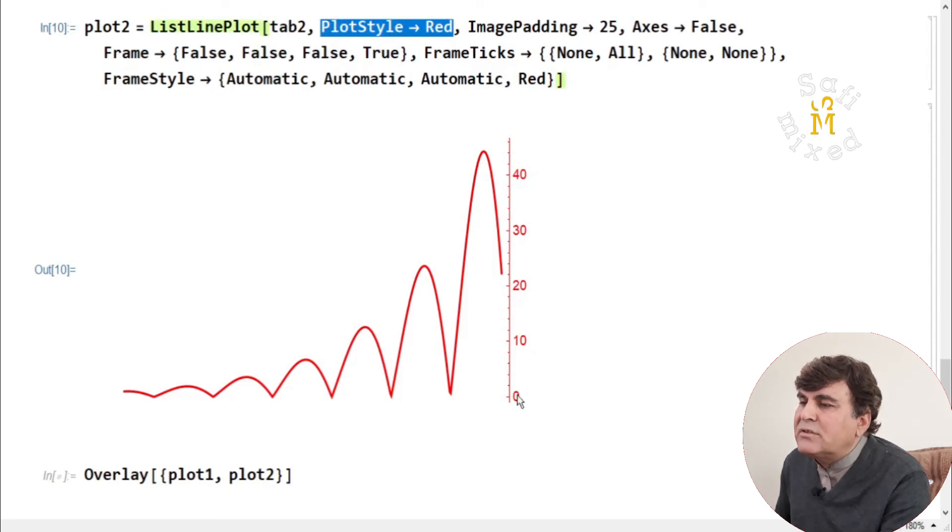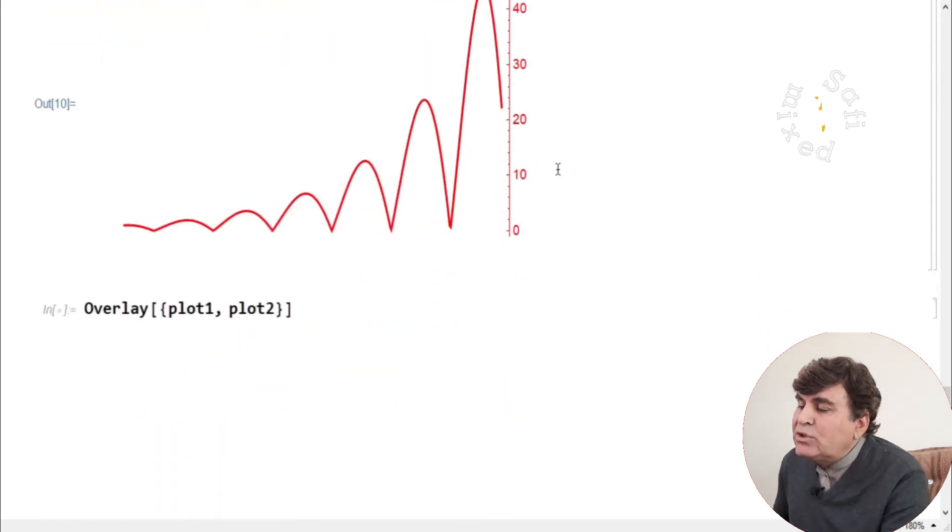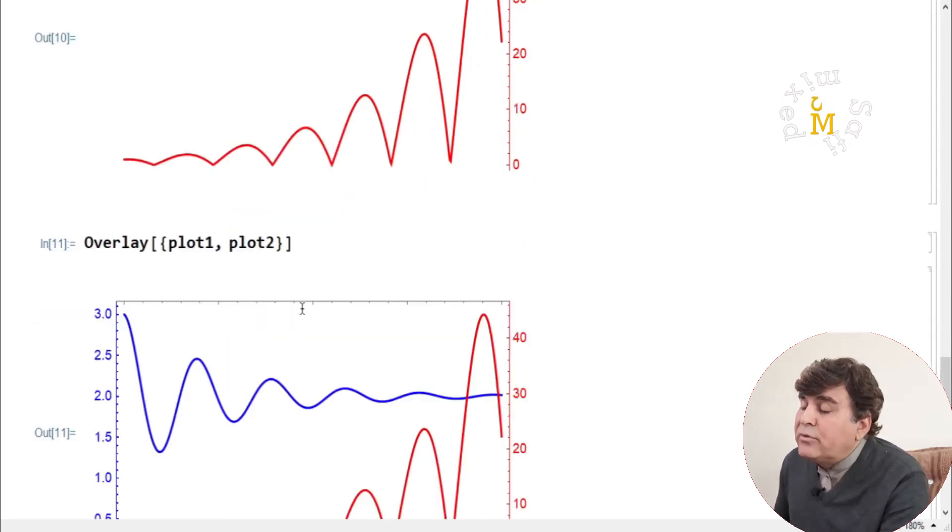Now I can combine the data stored in plot 1 and plot 2 on a single frame through the overlay command. This is the command that will give you the actual variation of the two plots with two different ordinate values. If I run it, I get a plot which is desired.